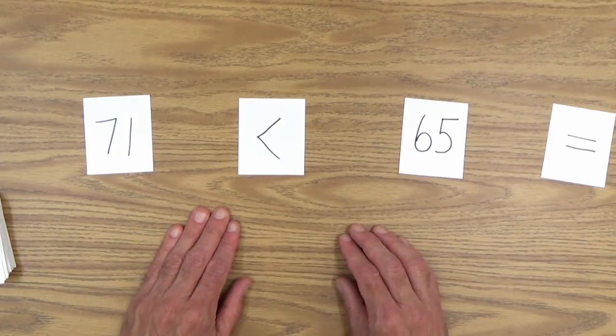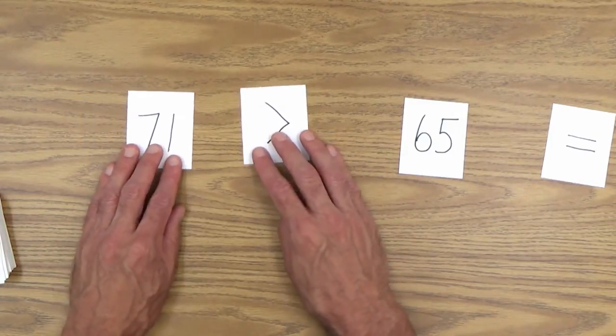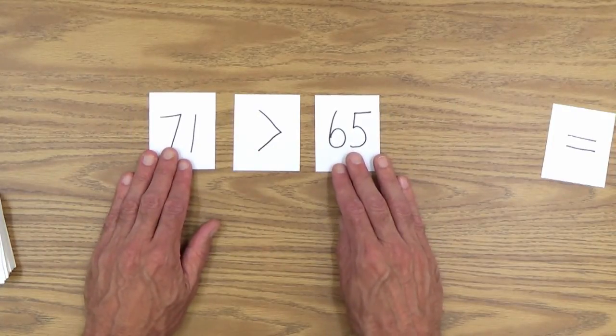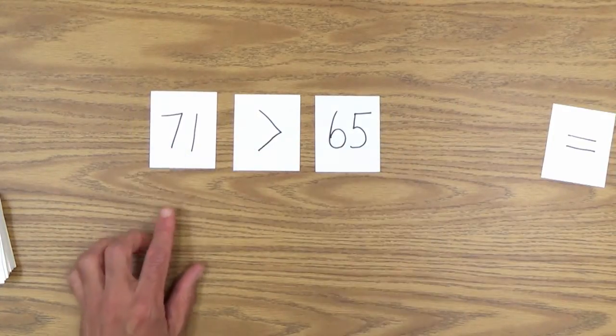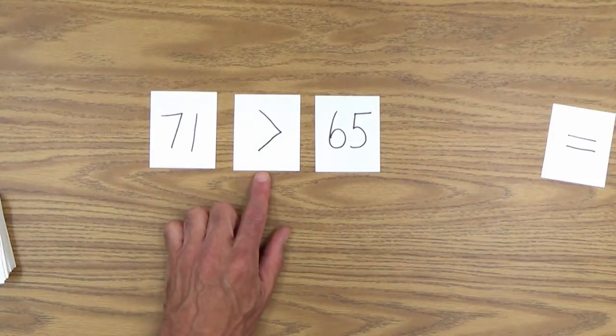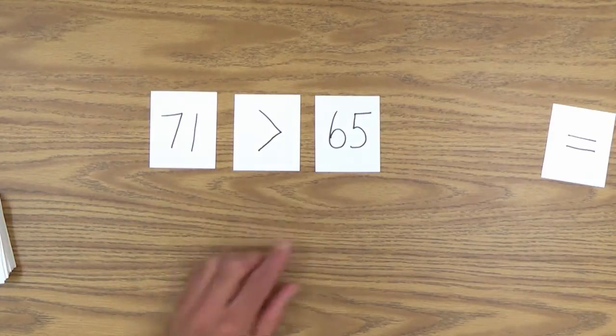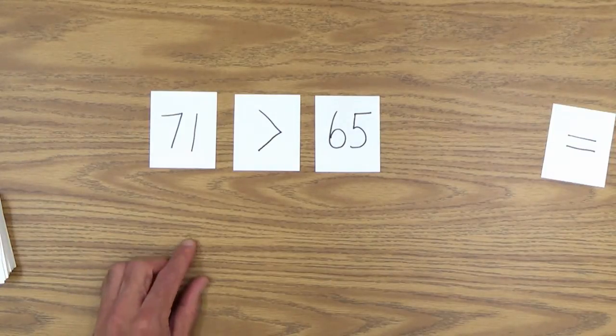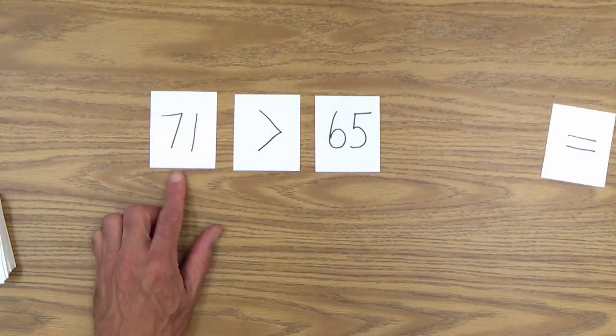So actually, you might want to start like this to give her a positive example. You could say, Mary is 71 greater than 65. And if she knows her numbers, of course, she's going to say, well, of course it is. That's a larger number.